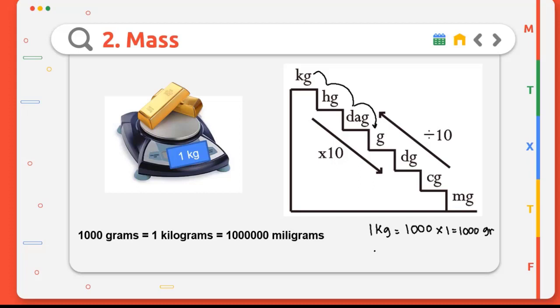If you want to convert from kilograms to milligrams, we go down six steps, so we multiply by 1 million. 1 kg equals 1 million milligrams.